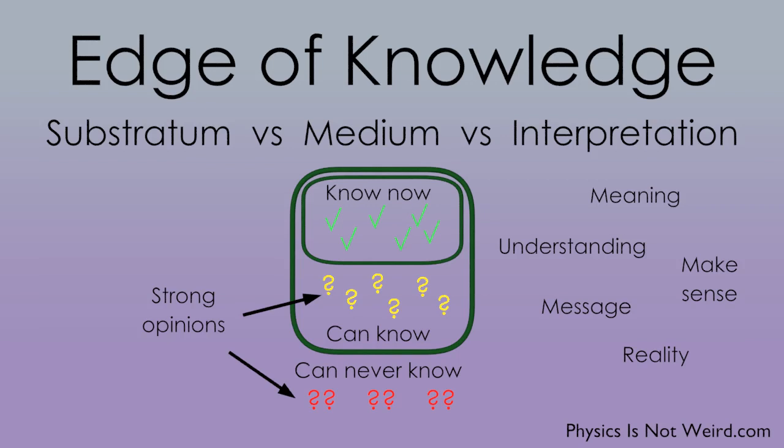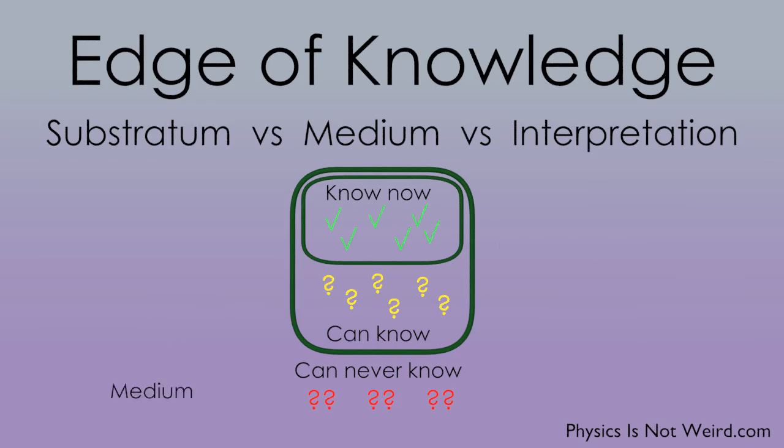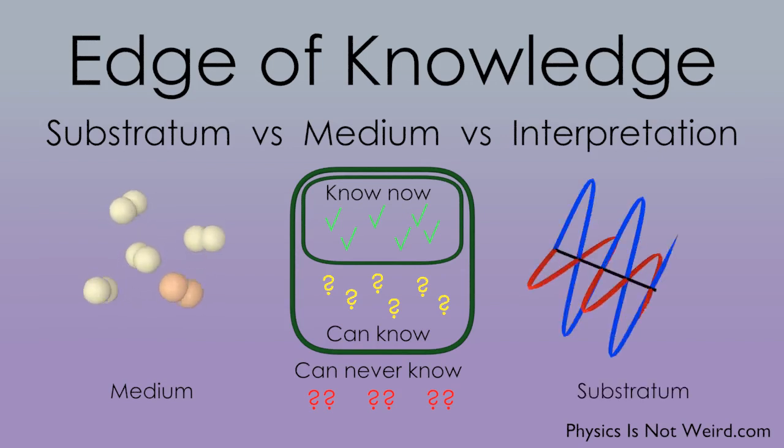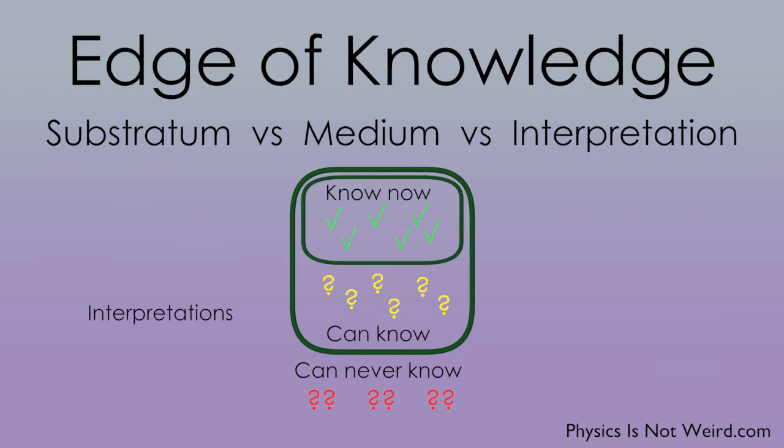In this video, I want to define some terms. I want to make a distinction between a medium, like air, and a substratum, like an electromagnetic field. I also want to put so-called interpretations in this context and see how they relate to the edges of knowledge. But first, let's have a little fun.